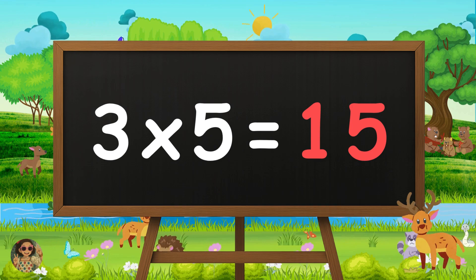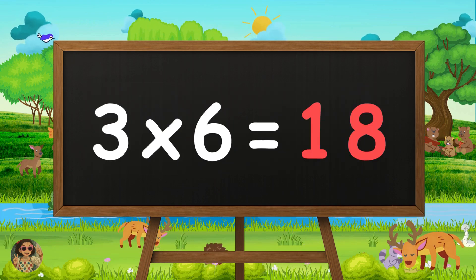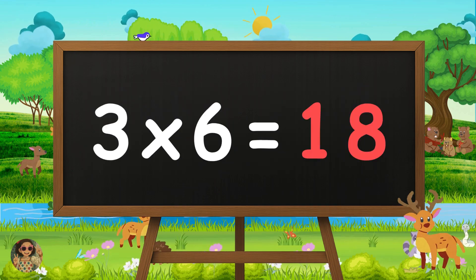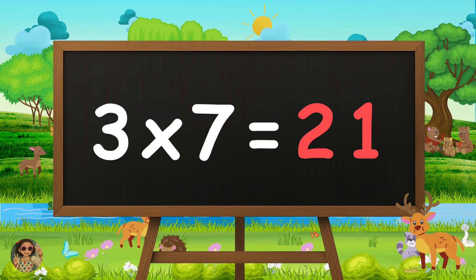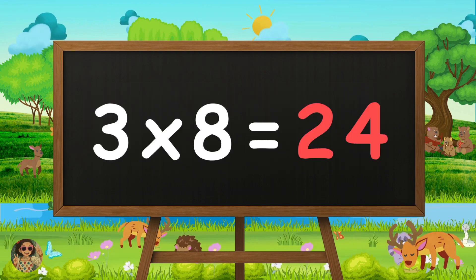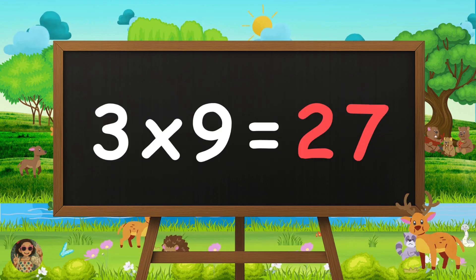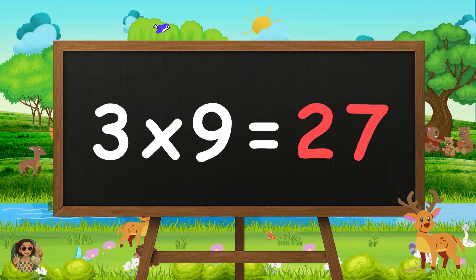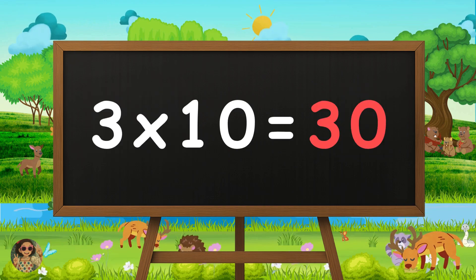3 times 5 is 15. 3 times 6 is 18. 3 times 7 is 21. 3 times 8 is 24. 3 times 9 is 27. 3 times 10 is 30.